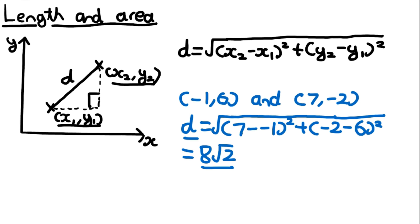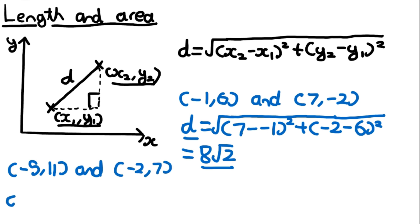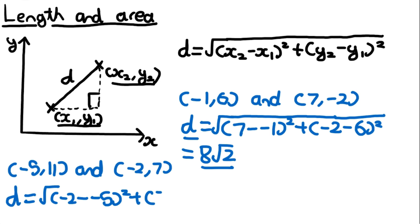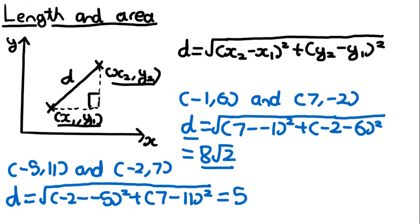Let's do another quick example. Let's say we have the points minus 5, 11 and minus 2, 7. If we want to find the distance between these two points, it's going to be the square root of (minus 2 minus minus 5) squared plus (7 minus 11) squared. If we put this into a calculator, we get 5 as the answer.